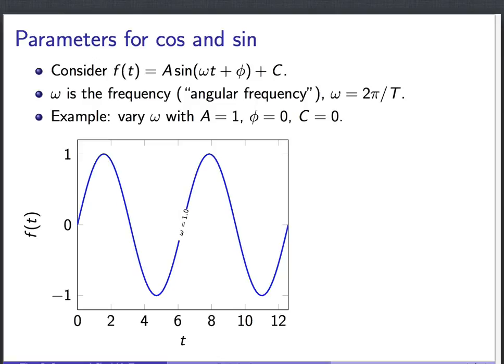Now let's talk about the frequency. So frequency is this Greek letter omega, ω. Sometimes in physics this will be referred to as the angular frequency. And I think the best way to understand frequency is perhaps this relationship here. It says frequency is inversely proportional to period, and the constant of proportionality is 2π.